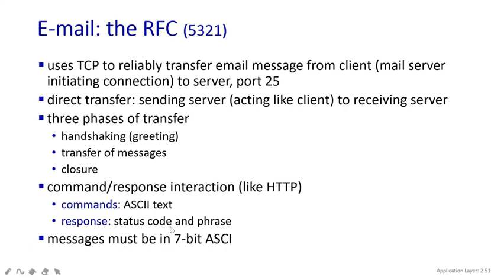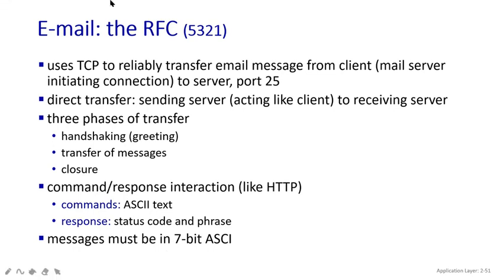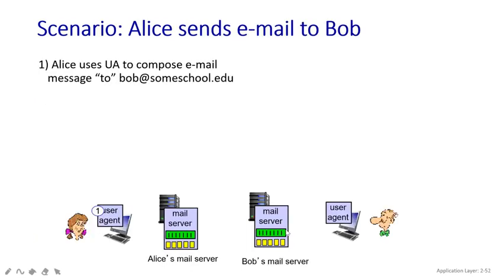In the last class, we discussed some status codes — 404 and similar ones — while sending HTTP messages. Here also, while receiving a message, it has to give a status code. By seeing the status code, we can understand the condition of the message: whether it was received, lost somewhere, or had a network issue. The status code has to be received with a phrase, and the message itself has to be in 7-bit ASCII code.